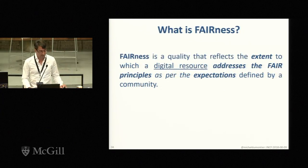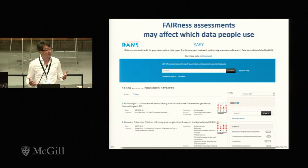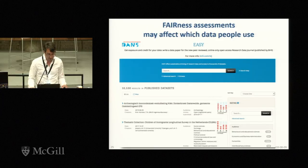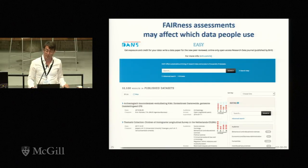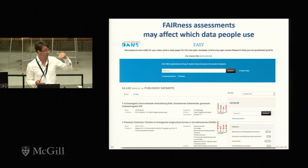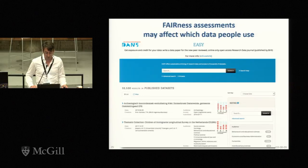FAIRness is a quality that really reflects the extent to which a digital resource meets the FAIR principles as per the expectations of the community. We imagine that people will do FAIRness assessments that reflect how FAIR your content is, and that will be reflected in search engines. You can imagine that if all other things were equal, ranking of search results would indicate which data sets have had extra efforts made to ensure reusability by that community. If you follow the FAIR principles, people will start to choose your content because it's easier for them to reuse.